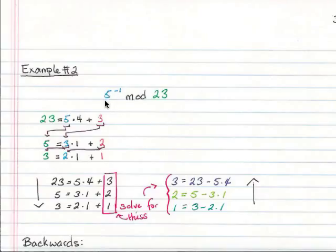So this example, we want to find 5 inverse mod 23. So first, we take the 23, put it here, take the 5, put it here. We just write it in this format as 23 equals 5 times 4 plus 3. So how I got that, 23 divided by 5 is 4 with a remainder of 3.